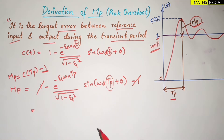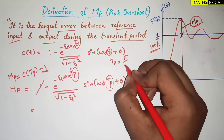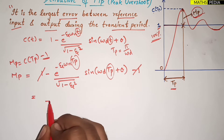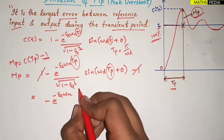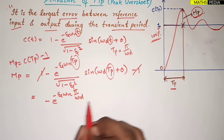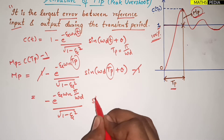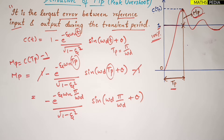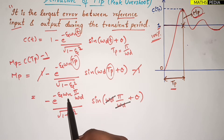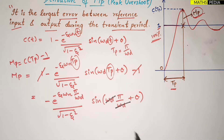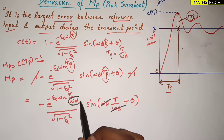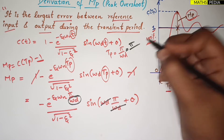Now we substitute tp = π/ωd. So tp in the exponent becomes π/ωd, giving: −e^(−ζωn·π/ωd) / √(1−ζ²) · sin(ωd · π/ωd + θ). The ωd in sin(ωd · π/ωd) cancels, giving sin(π + θ).